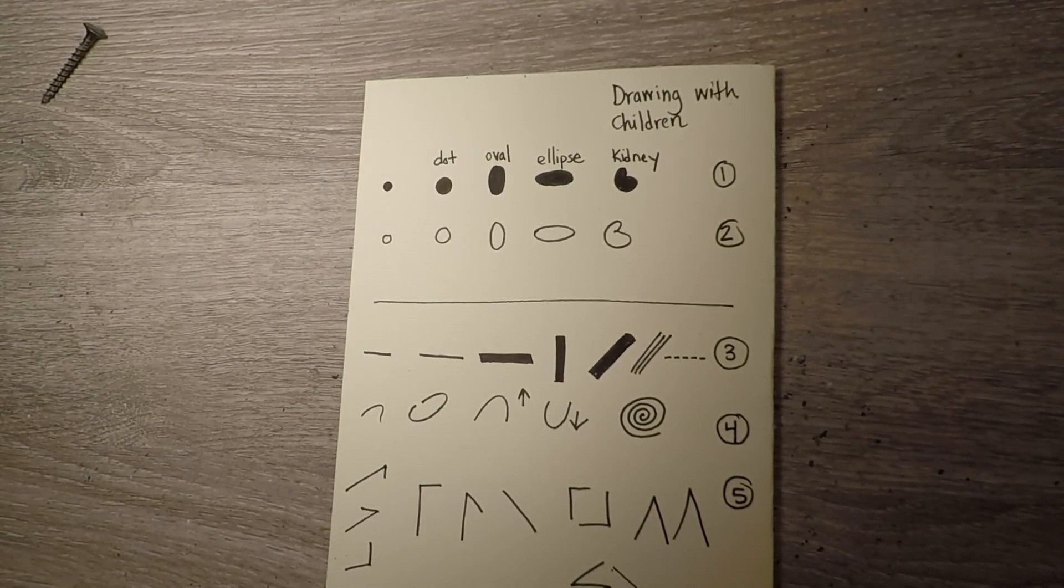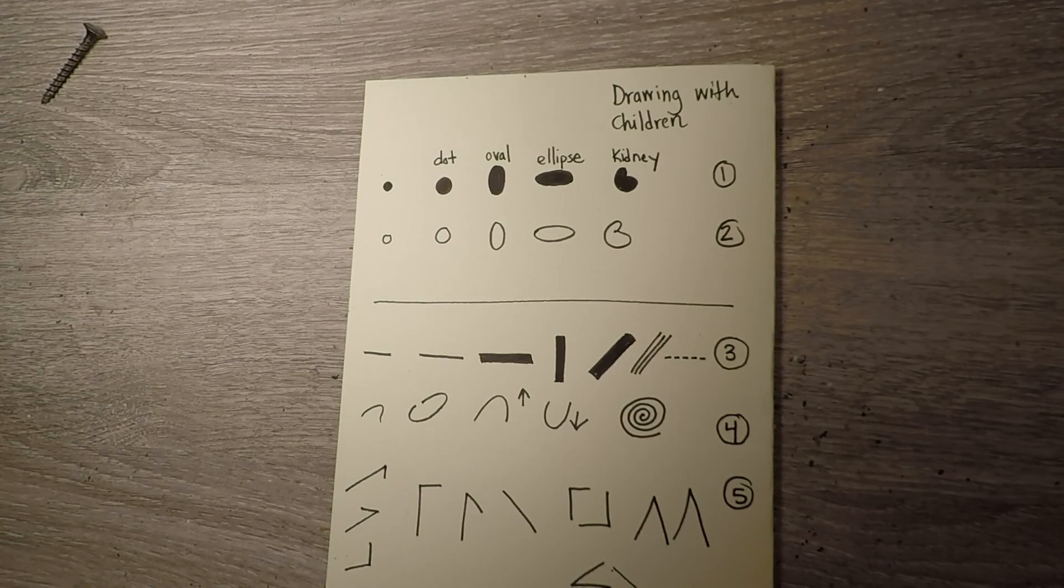So those are the five elements of shape. I highly encourage you to keep on practicing these, and I'm going to upload a PDF of basically some drawing exercises that I got from this book. So if you want to practice it, go ahead. And I can't wait for us to use these techniques in a drawing lesson. Okay, bye!